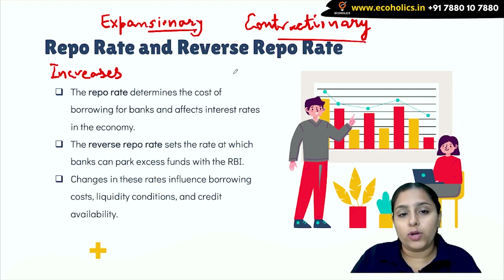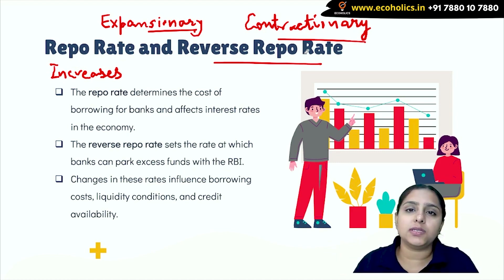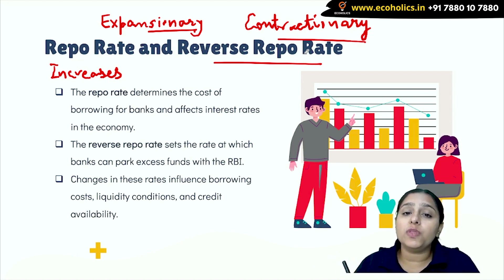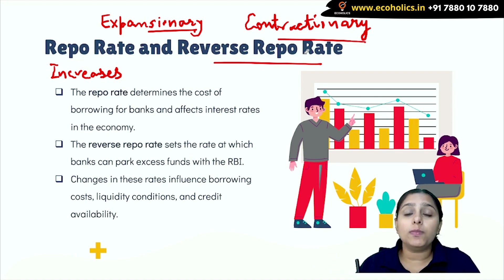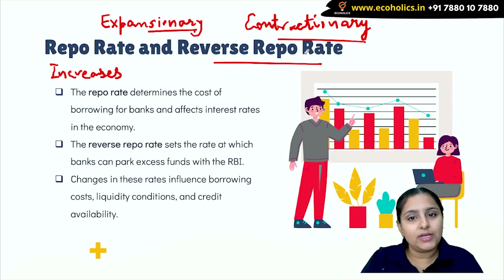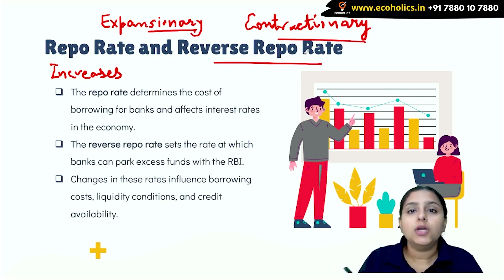Reverse repo rate works in the opposite way. RBI pays interest to commercial banks on their deposits. If the reverse repo rate is higher, commercial banks will be more willing to give their money to RBI, which will decrease liquidity. If the reverse repo rate is lower, banks will be less willing to deposit with RBI, so liquidity will increase. That is how reverse repo rate affects monetary policy.